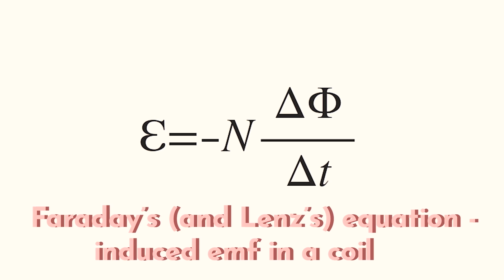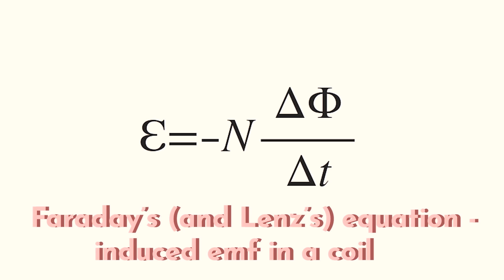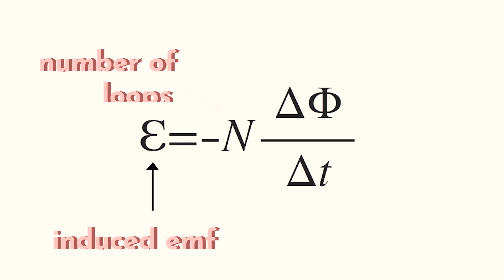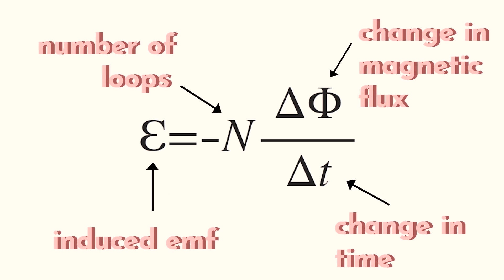According to Faraday's law of induction, when the amount of magnetic flux changes throughout the surface of a wire loop, it creates an electromotive force, or voltage. The amount of induced electromotive force in any closed circuit is equal to the rate of change of the magnetic flux enclosed by the circuit. In a transformer, there are usually two coils — the primary and the secondary.